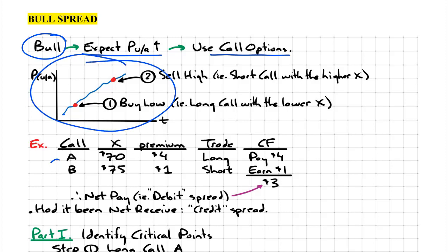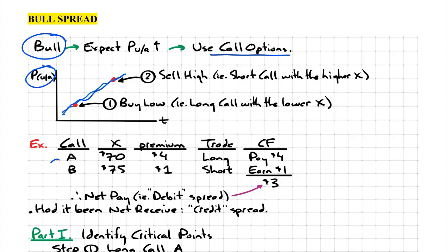Here's a visual of what's going on. We expect the price of the underlying asset to appreciate over time, which is why we have that upward sloping blue line. So what the investor wants to do is buy the stock at a lower price and then sell it at the higher price. We need to identify the call options that will enable the investor to execute each step of the trade.